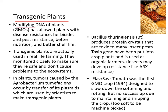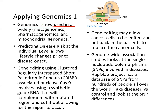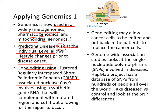Then there are transgenic plants — modifying the DNA of plants, GMOs. Applying genomics: genomics is now used widely in metagenomics, pharmacogenomics, and mitochondrial genetics. Predicting disease risks at the individual level will allow lifestyle changes before disease onset. We have also discovered CRISPR-associated nuclease Cas9, which uses a synthetic guide RNA that complements a mutated region. This nuclease cuts it out and allows repair to occur — potentially curing any diseases that stem from mutations.